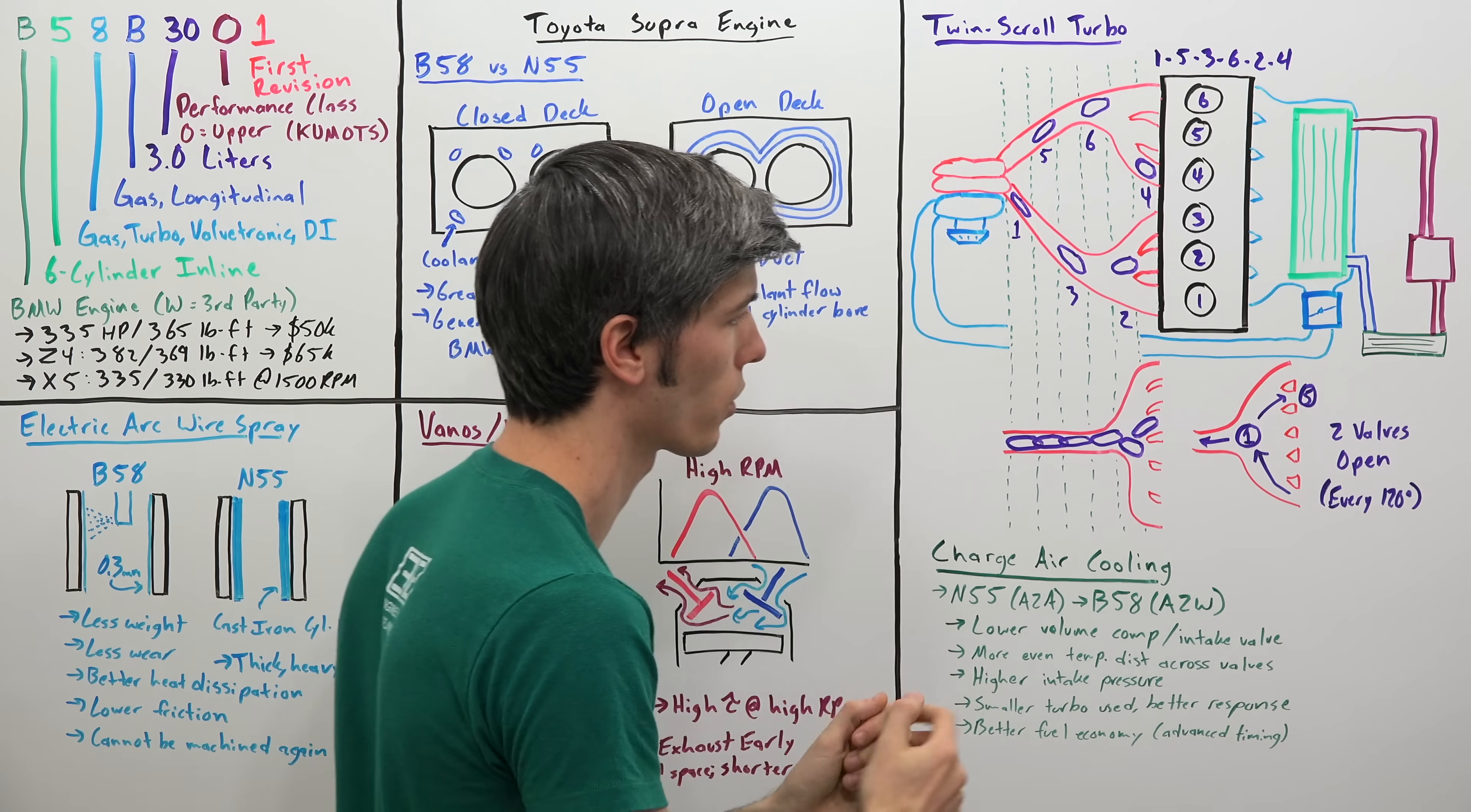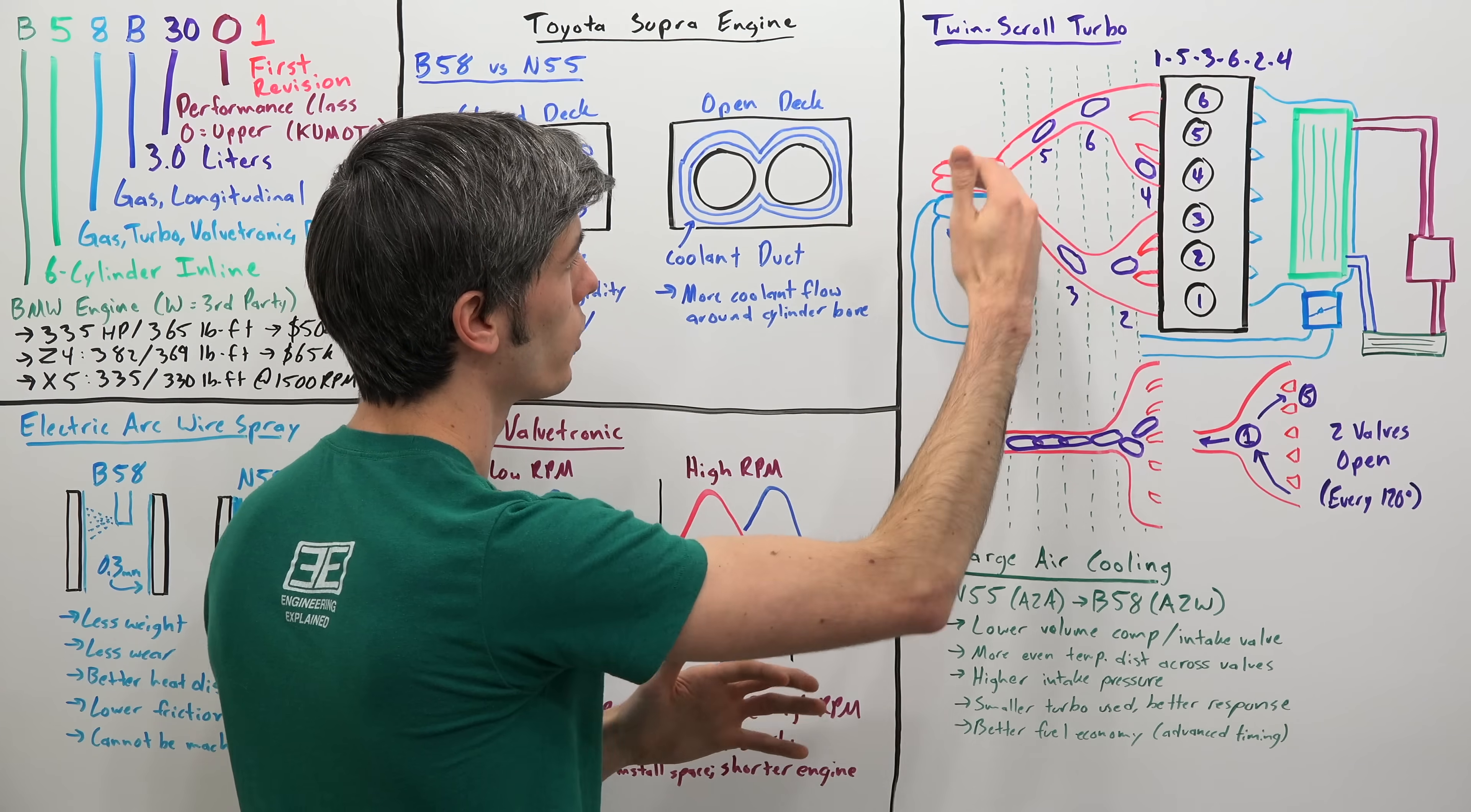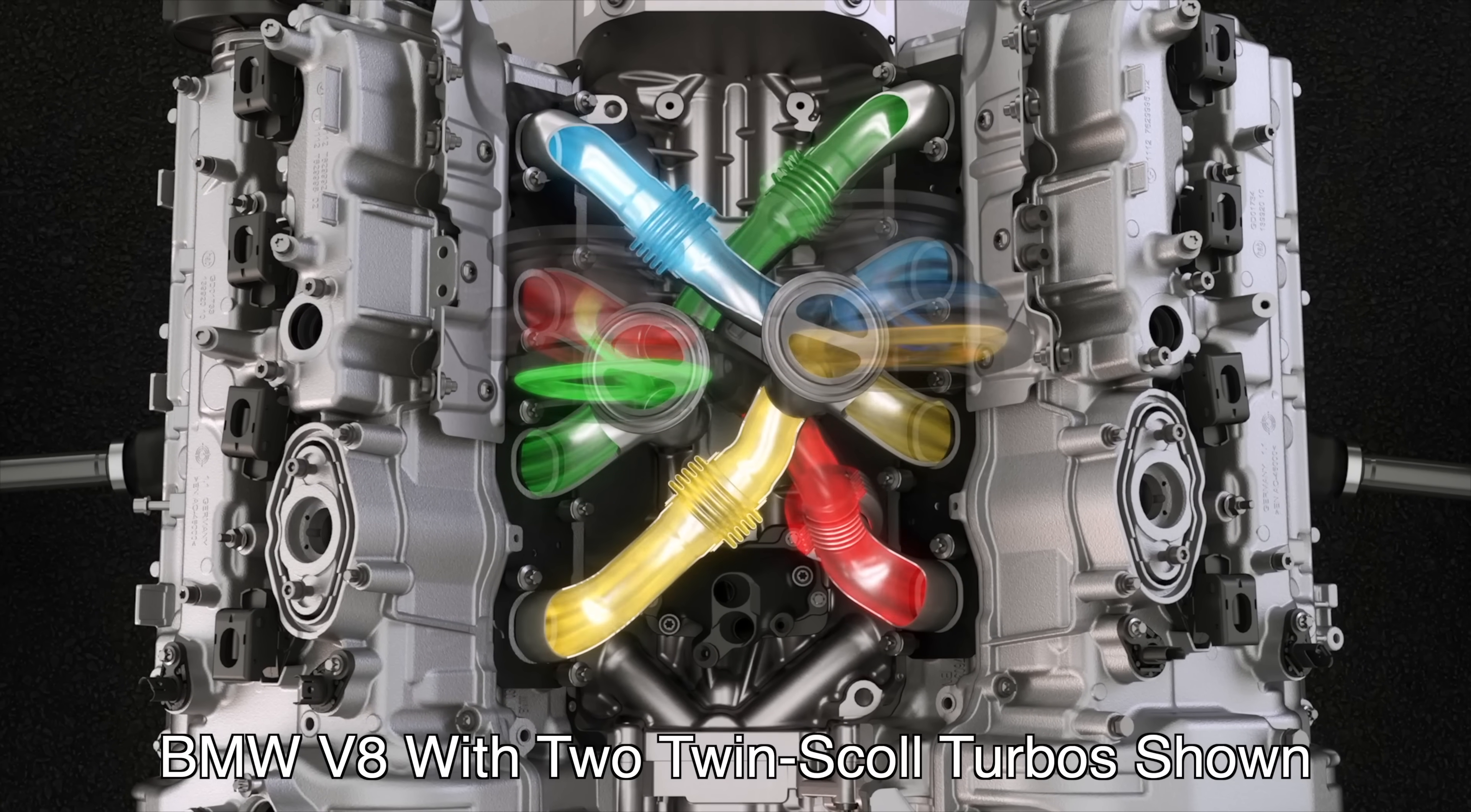So rather than having these kind of conflict with one another, you separate out those exhaust pulses and as a result you're able to maximize the amount of energy you can put in that turbocharger, maximize boost, minimize turbo lag, and you're doing this by ensuring that each exhaust manifold does not have two valves open at the same time with interfering exhaust pulses.